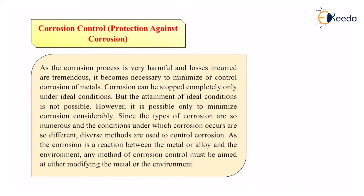The corrosion process is very harmful and the losses incurred are tremendous. In day-to-day life, domestic appliances include many kitchen utensils and modes of transportation like cars and cycles — all made up of metal. On an industrial level, there are big machineries that are getting harmed because of corrosion. The losses are tremendous, and it becomes necessary to minimize or control corrosion of metals.